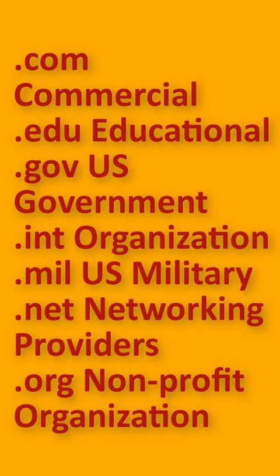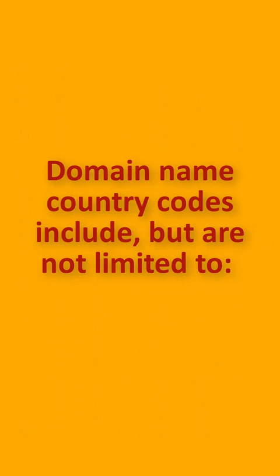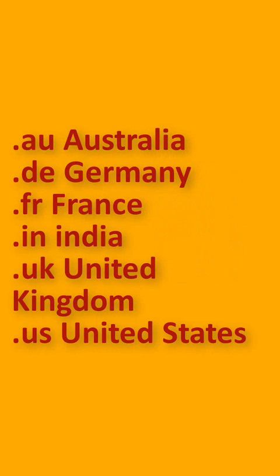.net is for networking providers, and .org is for non-profit organizations. Let's also discuss country code domain names, which include but are not limited to: .au for Australia, .de for Germany, .fr for France, .in for India, .uk for United Kingdom, and .us for United States.